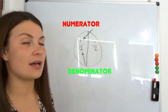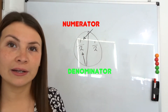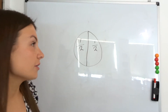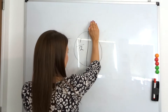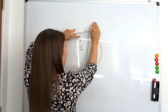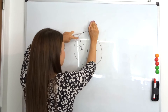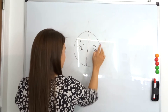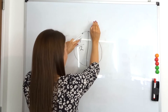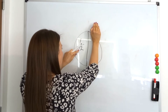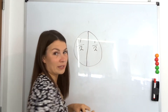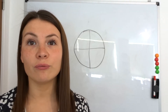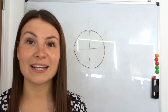Why is the number on the top - and we call that number the numerator - why is the numerator one? Good, because if we were to look at this side, we've got one part of two pieces. So this side here is just one part of two equal pieces.